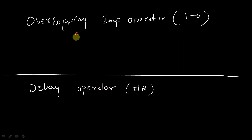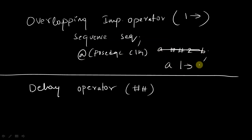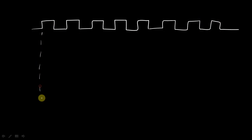We will write a sequence — let's say the sequence name is seq — with two variables. Our evaluation point is the positive edge of the clock: @(posedge clk). For the delay operator we write A ##1 B within a sequence. For the implication operator we write simply A |-> B. Let us draw a clock signal to understand this more clearly. The assertion evaluation takes place at the positive edges of the clock.